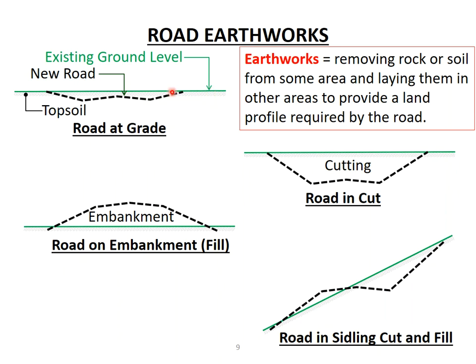Looking at these drawings, the first shows a road at grade. In this case, the existing ground level is shown in green and the road is shown as a dashed black line. All that is needed is to remove the topsoil and vegetation and then shape the road using a grader — that's why it's called a road at grade. No earthworks are really required for this type.